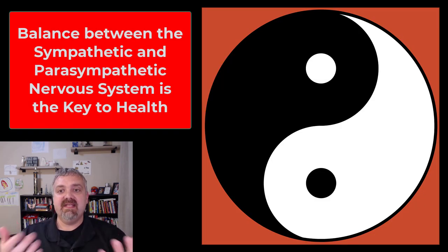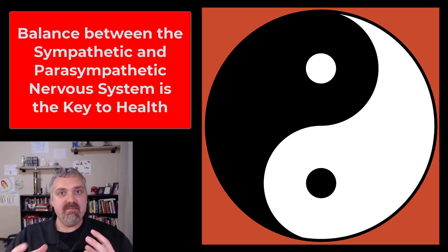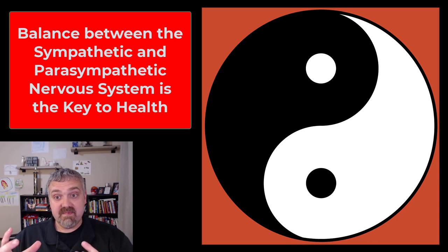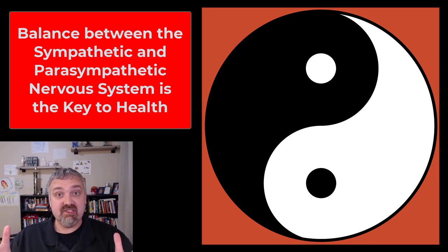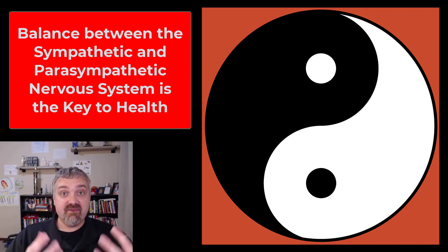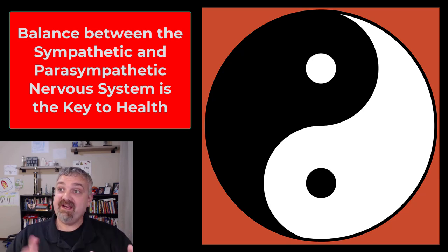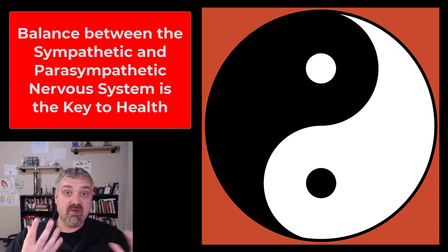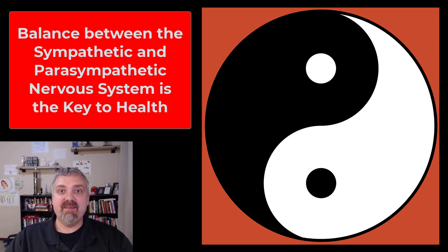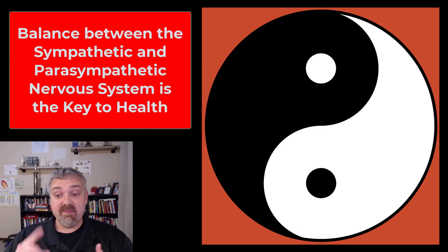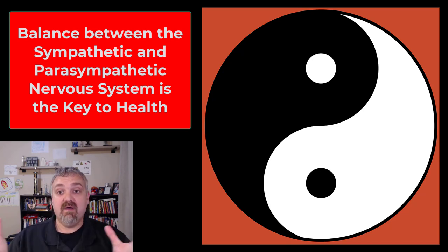The yin-yang symbol is important here because the key with the autonomic nervous system is balance. We need both systems. We need stress — stress motivates us and drives us. Exercise is a stressor that makes us healthier, and deadlines drive students to perform. But life can't just be stress either; we have to take our foot off the gas sometimes. Are you getting enough sleep? Are you doing things that bring you joy? There's no good system and bad system — they're both needed. The key is balance. So much of our modern struggle with stress, anxiety, and depression comes from an imbalance: our foot is always on the gas and never on the brake. That's a quick overview of the two halves of this system — we'll cover more anatomical details coming up. I hope this helps. Have a wonderful day. Be blessed.